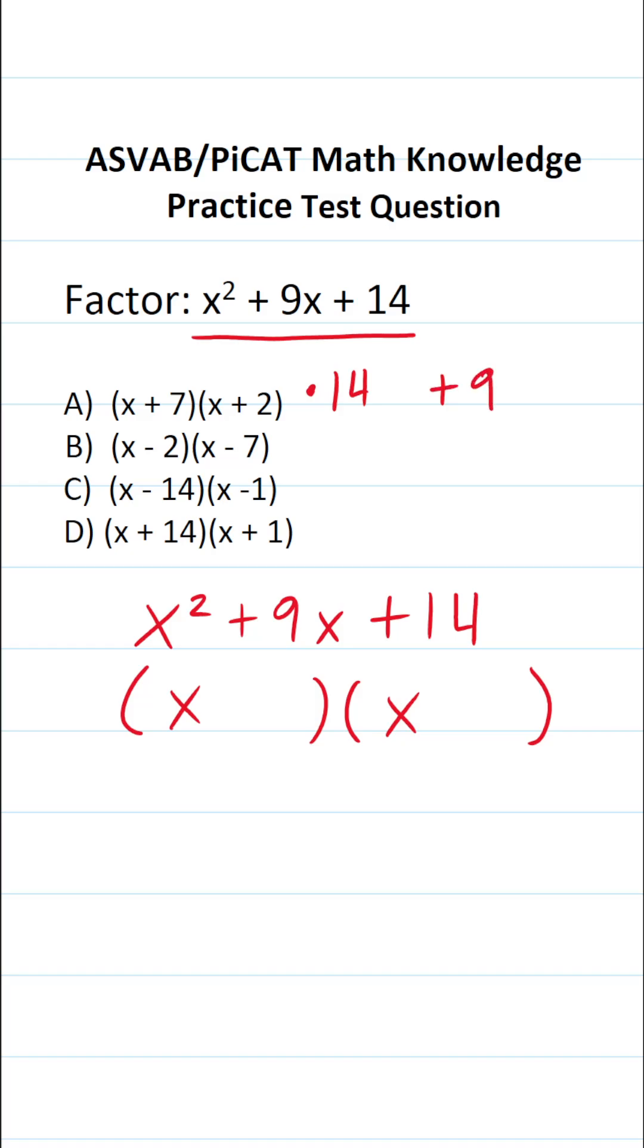So if it's helpful, you could do this off to the side. What two numbers multiply to positive 14? What about 7 and 2? What is 7 plus 2? 7 plus 2 is 9. So our two factors are going to be plus 2 and plus 7.